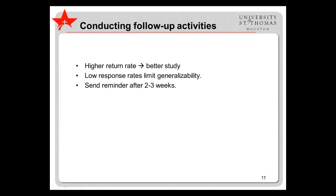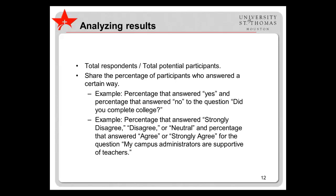In survey research, the higher the rate of return of surveys, the better the study. This is because low response rates limit generalizability — that is, your ability to say that the responses you received are representative of the whole population's opinions or perspectives. Regardless of your initial rate of return, consider sending a reminder to all prospective participants after two to three weeks. In analyzing your data, you should always report the total number of people who responded to the survey and the total number of people to whom the survey was sent. You can also share the percentage of participants who answered a certain way — for example, the percentage that answered yes and the percentage that answered no, or the percentage that answered strongly disagree, disagree, or neutral versus agree or strongly agree.